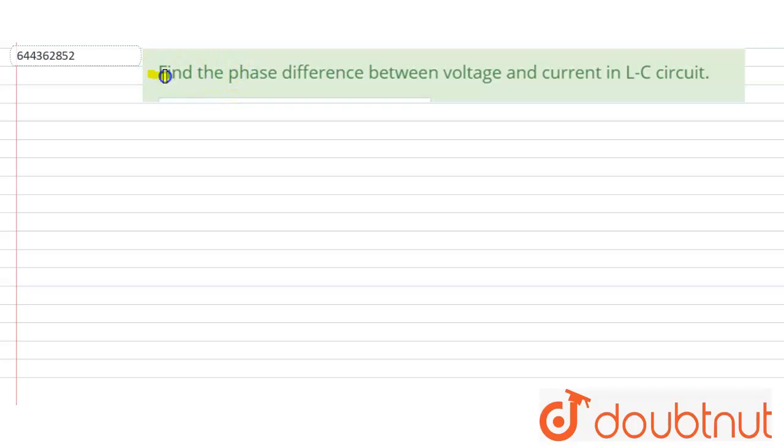The question is: find the phase difference between voltage and current in the LC circuit. So we know that in